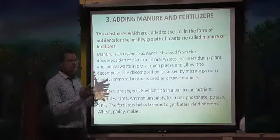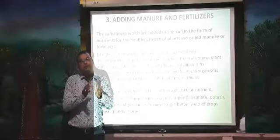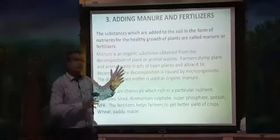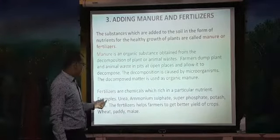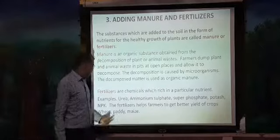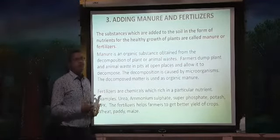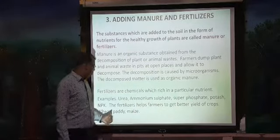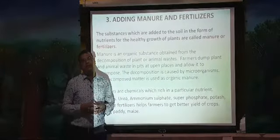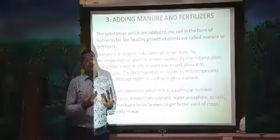What about fertilizers? Fertilizers are chemicals. One particular fertilizer supplies one particular nutrient, whereas manure supplies almost all nutrients to crops. Examples of fertilizers include urea, ammonium sulfate, superphosphate, potassium, and NPK — which means nitrogen, phosphorus, and potassium. These are important for the better growth of plants and for getting better yield of crops like wheat and paddy. However, chemical fertilizers are very dangerous and cause loss of soil fertility, and the soil loses its absorbing capacity and becomes quite hard.